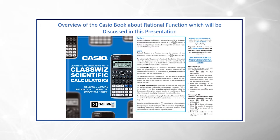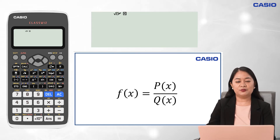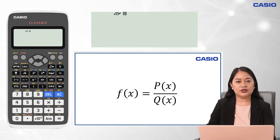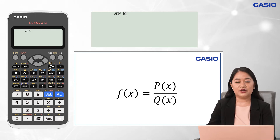The examples and steps to be discussed in this presentation are also indicated in the Casio book about rational function. As defined, a rational function is a function showing the quotient of two polynomials, p and q, written in the form f of x equals p of x over q of x, where q of x is not equal to 0. Its domain is a set of real numbers except for the values that will make the denominator equal to 0.